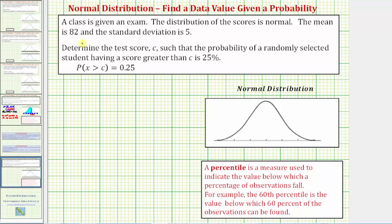So because the mean is 82, we know μ equals 82, and because the standard deviation is five, we know σ equals five.